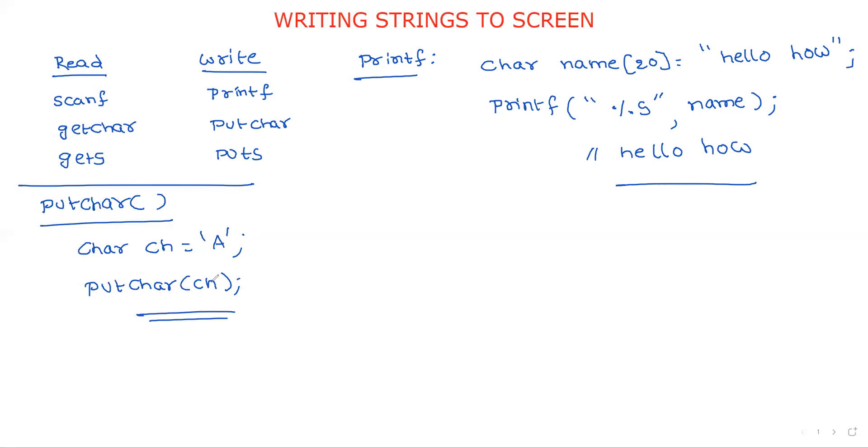Now I will explain with one program. Main function: char a[10] equals "welcome". This is my string. Int i; for(i equals 0; here we are writing some condition. What is the condition? Until the end of a string. By default the string ends with a null character.